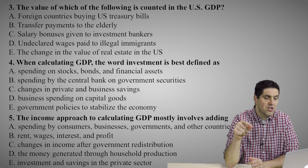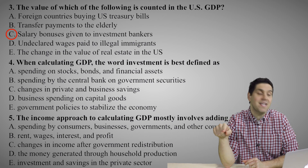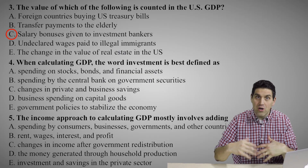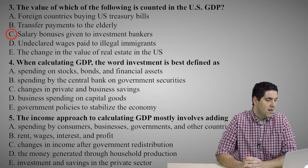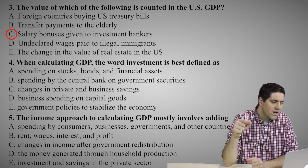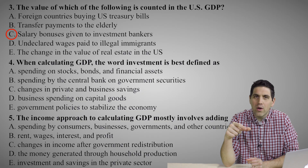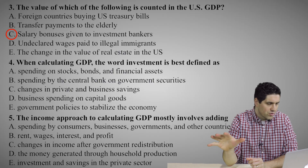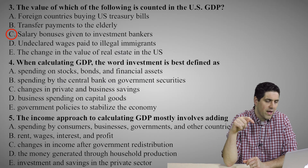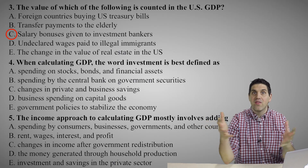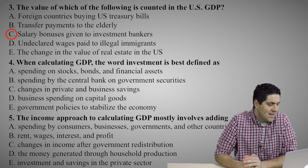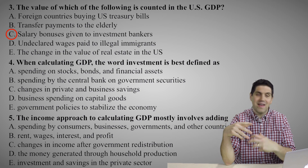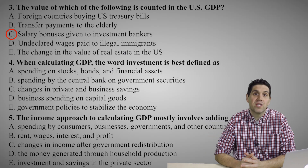Question number three: the value of which of the following is counted in US GDP? The right answer is C — a salary bonus to an investment banker is a wage earned from work, and that counts towards GDP. The wrong answers: foreign countries buying US Treasury bills don't count — that's a purchase of an asset. Transfer payments to the elderly don't count. Undeclared wages to an illegal immigrant don't count. And the change in value of real estate doesn't count — if home prices go up, that's just an asset, not a change in what we're producing.